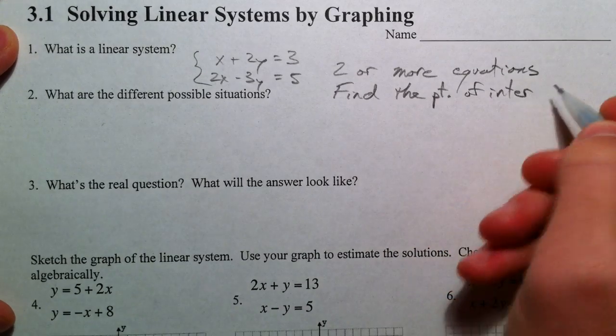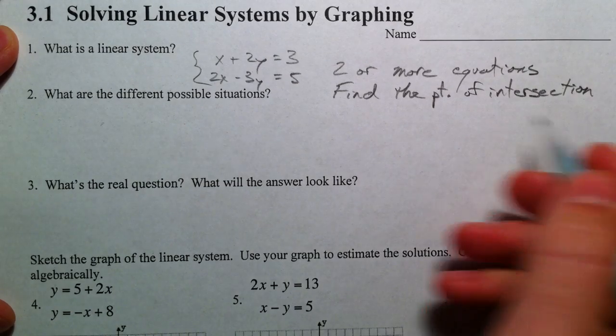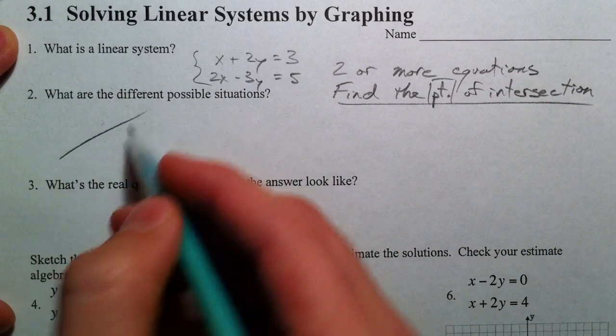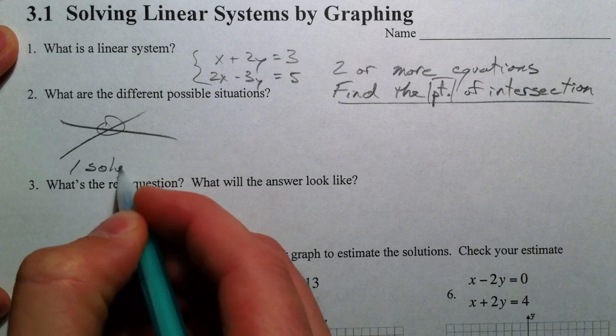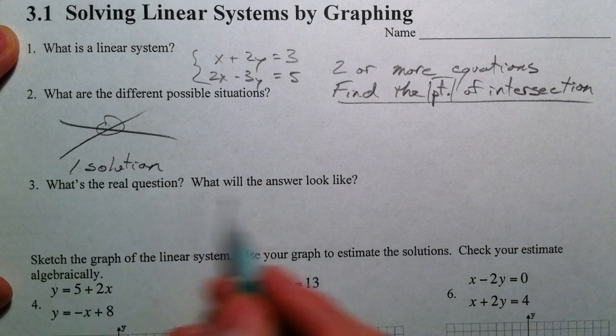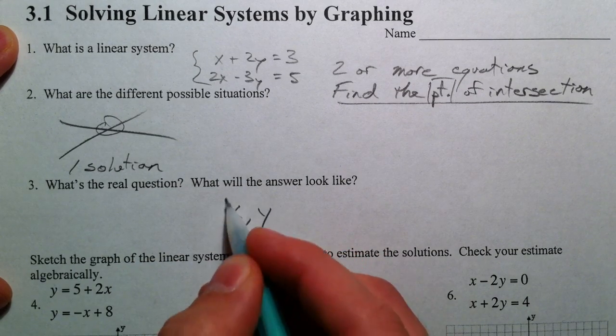Three things can happen. Find the point. Either the lines could intersect and you have a solution. And when we talk about that, what's the answer going to look like? It's going to look like a point, an x-y coordinate.